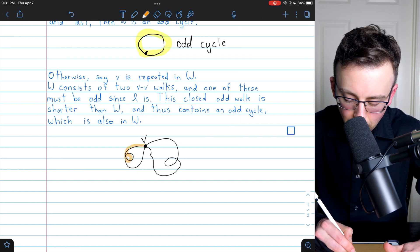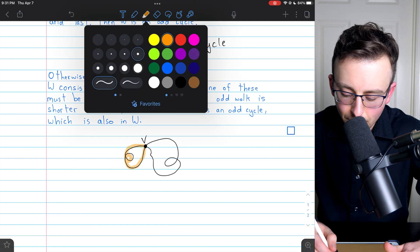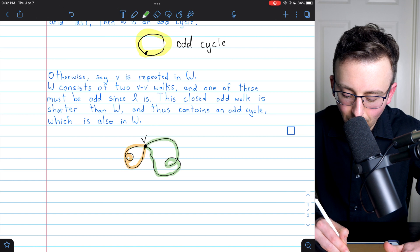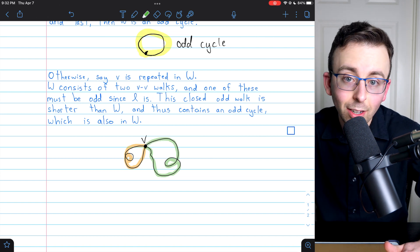So we've got this VV walk, goes from V to V, and then we've got this VV walk. So W consists of two VV walks.